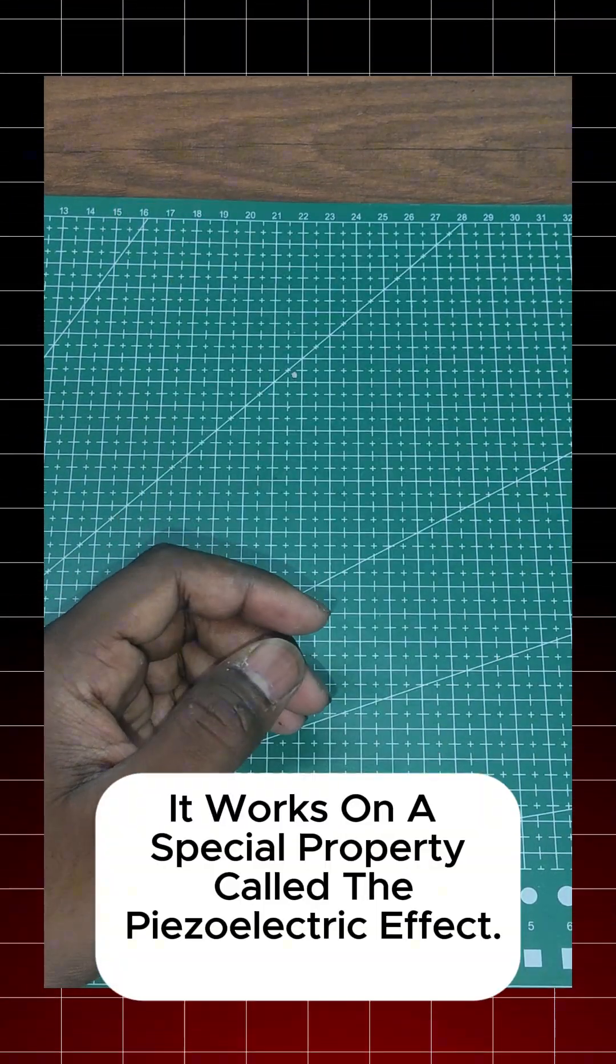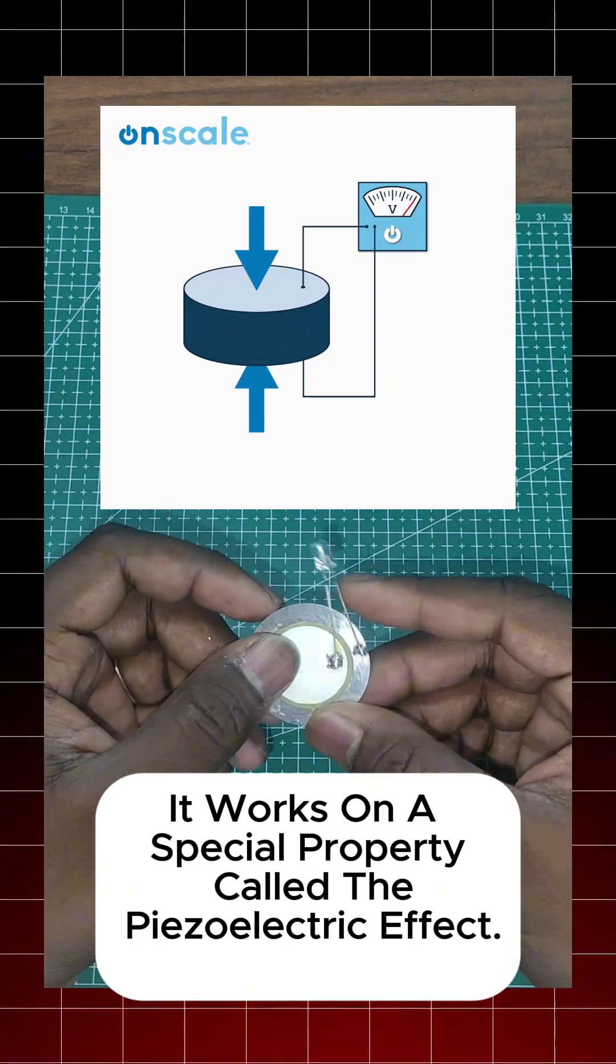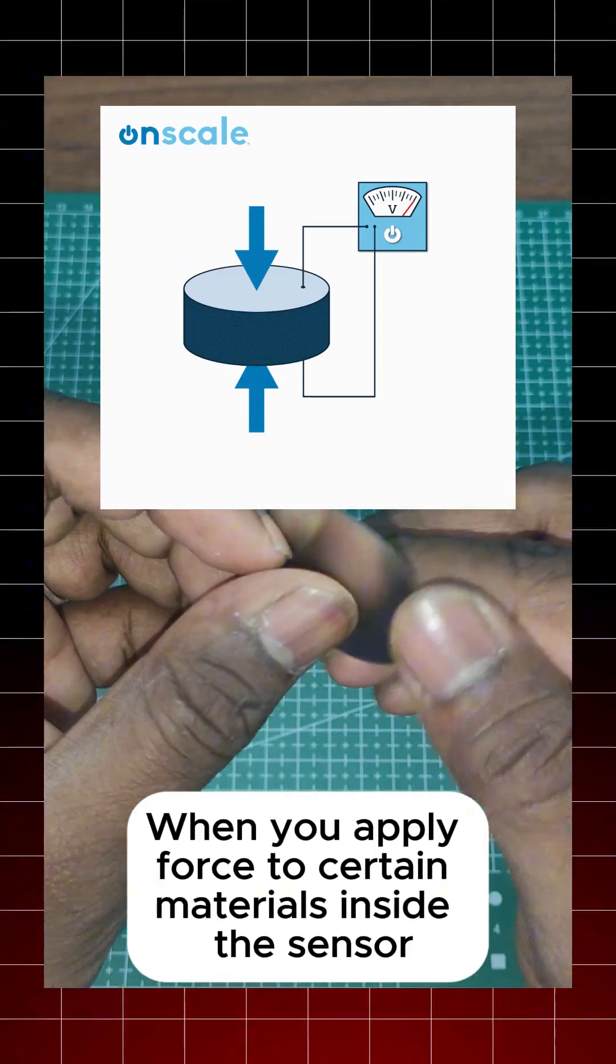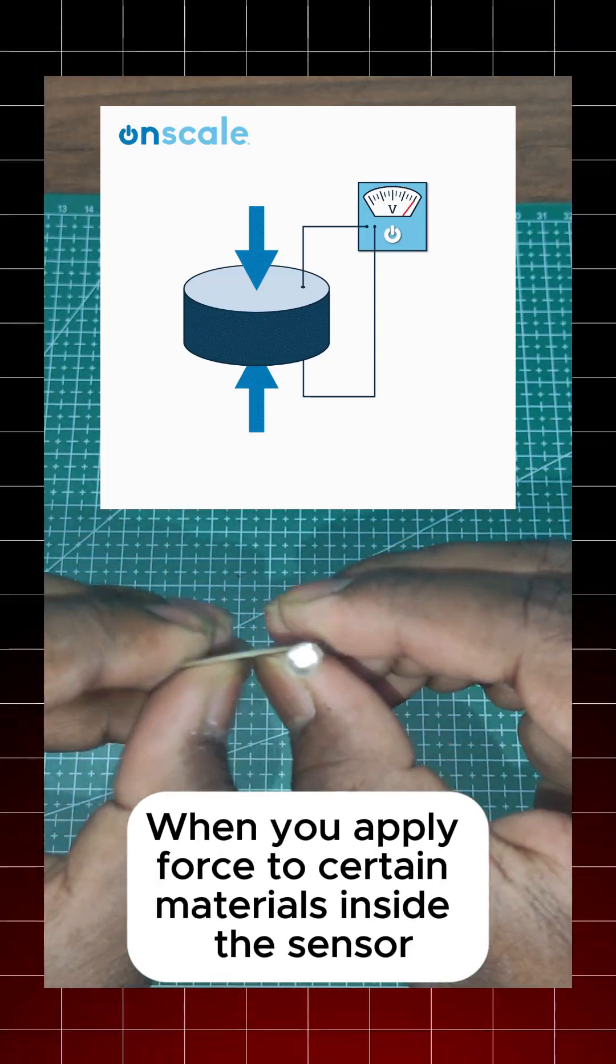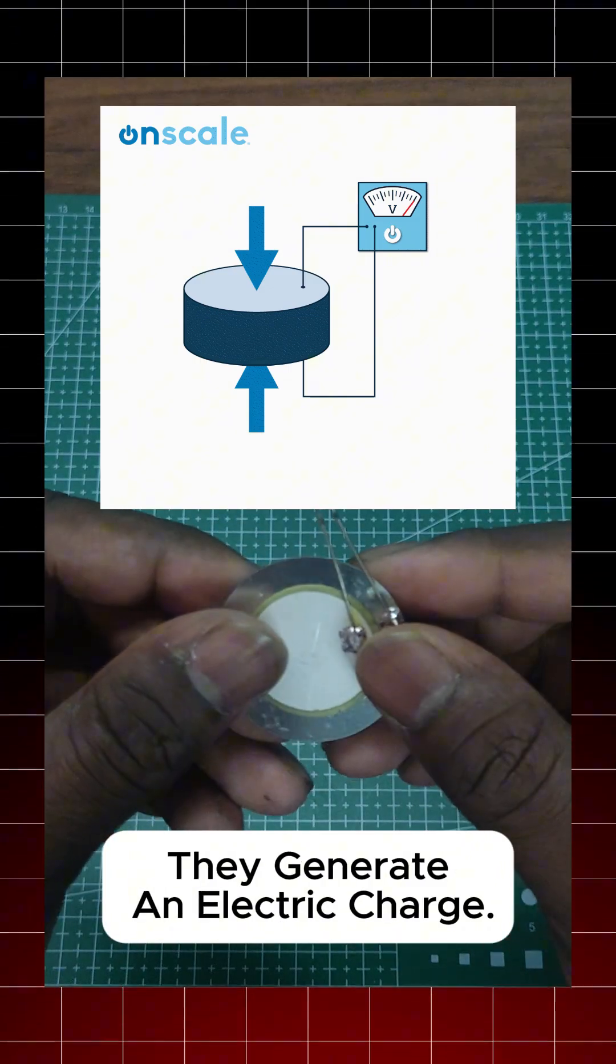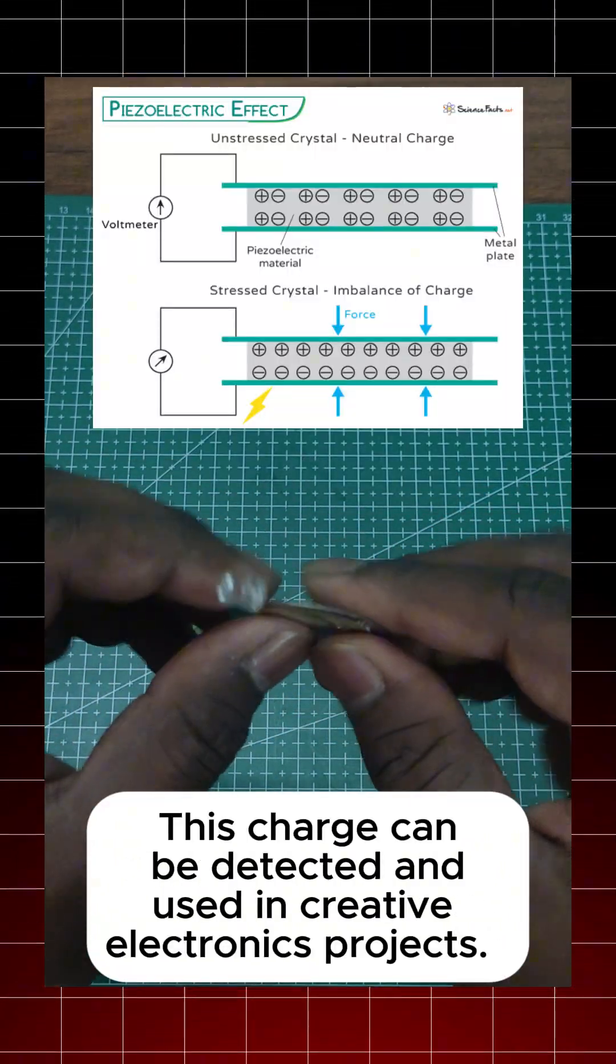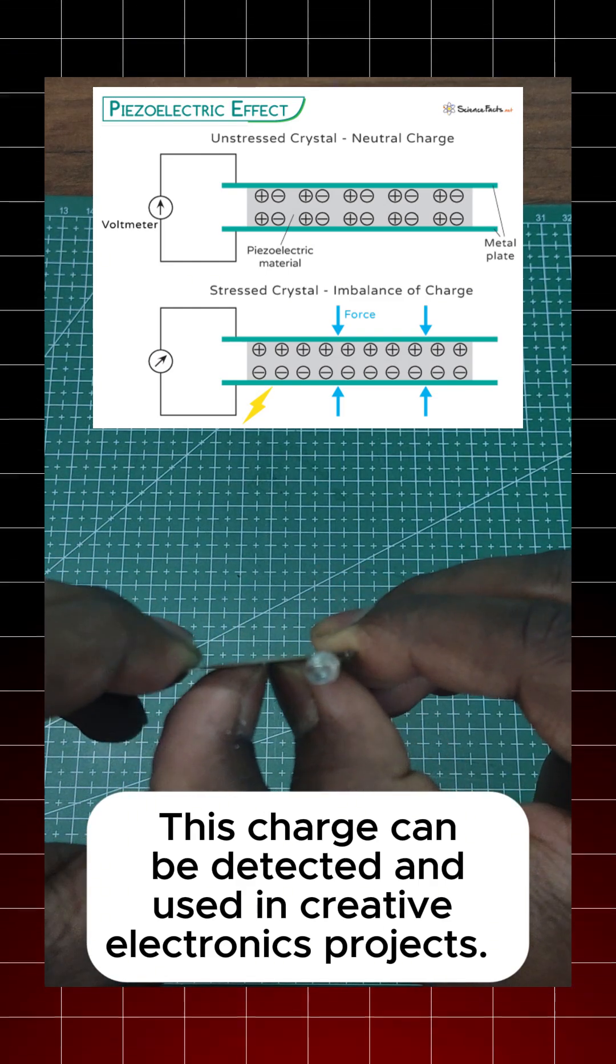It works on a special property called the piezoelectric effect. When you apply force to certain materials inside the sensor, they generate an electric charge. This charge can be detected and used in creative electronics projects.